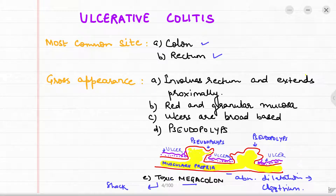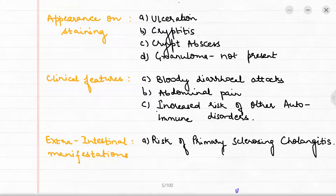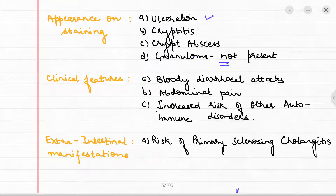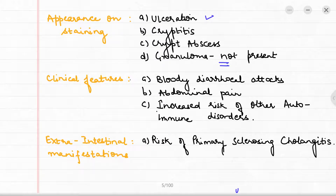On staining in ulcerative colitis, we see ulceration, cryptitis, and crypt abscess — similar to Crohn's disease. However, granuloma is not present. In Crohn's disease there was a non-caseating granuloma, but in ulcerative colitis the granuloma is absent.